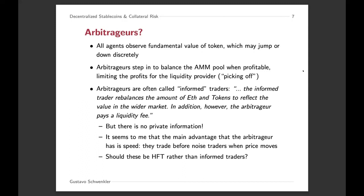There's a sentence in the paper that says the informed trader rebalances the amount of ETH and tokens, and then the arbitrageur pays a liquidity fee. But in this model, information is hard to understand because there's no private information — the fundamental value of the token is observed by all agents. So I don't quite understand how we can interpret this as an information-driven trade. It seems to me more that this arbitrageur is stepping in first and front-running everybody else — more of a high-frequency trader that steps in to balance out this pool when needed, rather than an informed trader with private information. Just fine-tuning the interpretation would be helpful to understand what is being captured in the model.